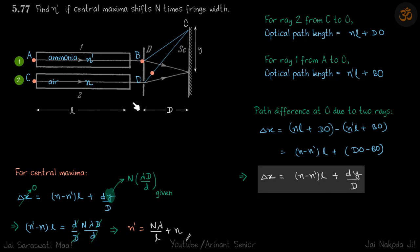This length is given and this d is actually not given in the problem. We are just assuming this value to be d. So for central maxima, let's find the path difference for both the rays. And when we equate that path difference to zero, that's where we will get central maxima.